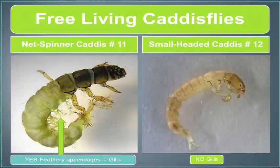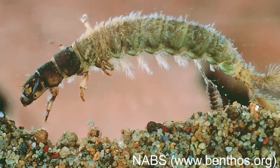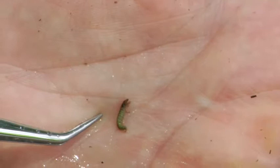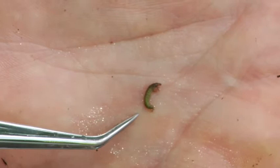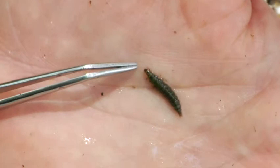Here are the two types of free-living caddisflies: the net-spinning caddisfly and the small-headed caddisfly. The best way to tell the difference is to look for the gills, which look like feathery little appendages on the underside of their body. If you find feathery appendages — gills — on a wormy-looking critter with legs, that is a net-spinning caddisfly. If you look and cannot find gills, you've got a small-headed caddisfly.